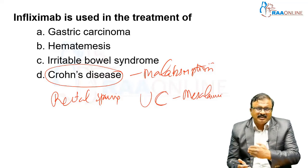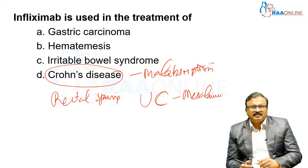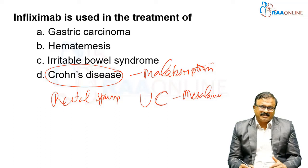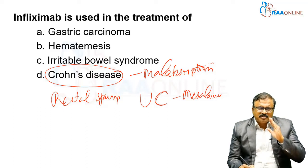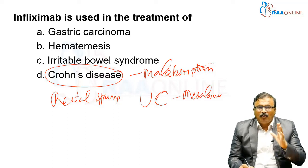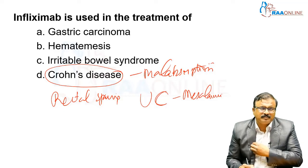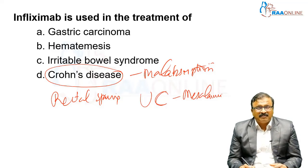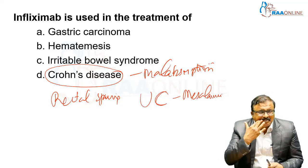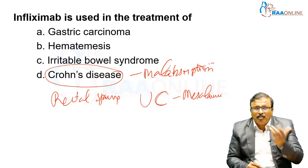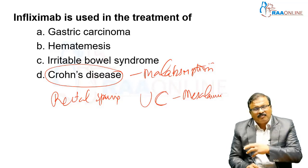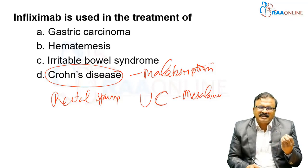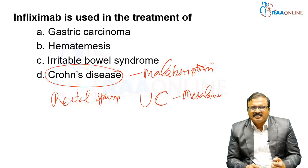Pyoderma gangrenosum and other extra-GI manifestations are seen with both Crohn's disease and ulcerative colitis. Infliximab is used for various autoimmune diseases including rheumatoid arthritis. Before using infliximab or any biologicals, a latent TB workup is required, as biologicals can flare up TB and other serious life-threatening infections. Irritable bowel syndrome is diagnosed using the Rome criteria, involving episodes of altered stool habits with abdominal pain; treatment includes drugs reducing bowel secretions and some antidepressants.